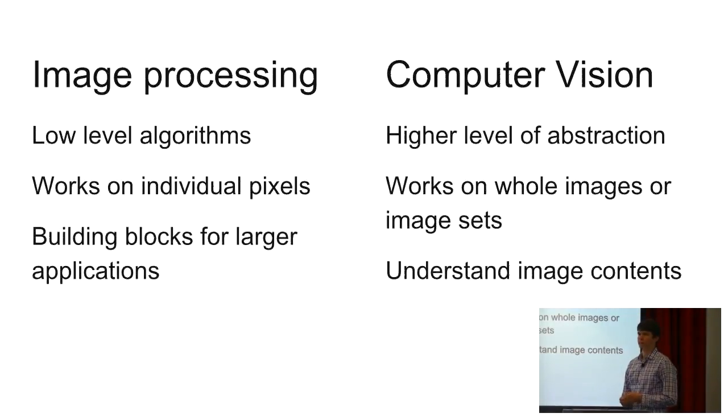A lot of image processing things we're going to talk about you won't actually directly use, but they're components in a larger pipeline. Usually the goal of computer vision is to get some knowledge about an image or photo and be able to do something with that, whether that's label it or use it as part of a larger set.